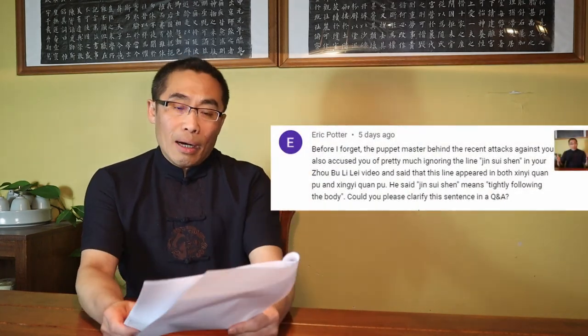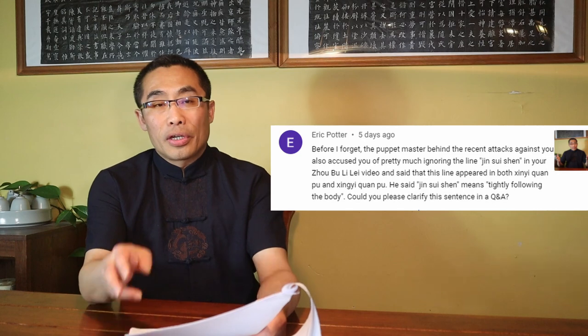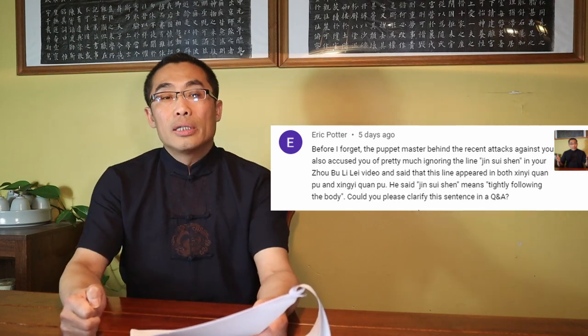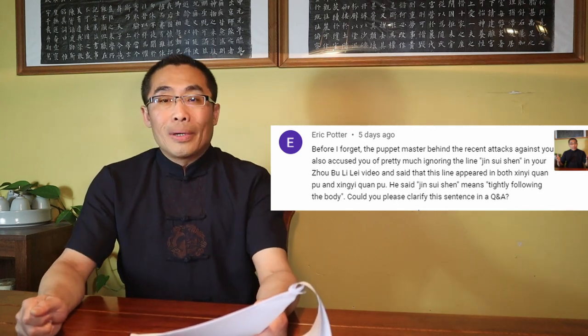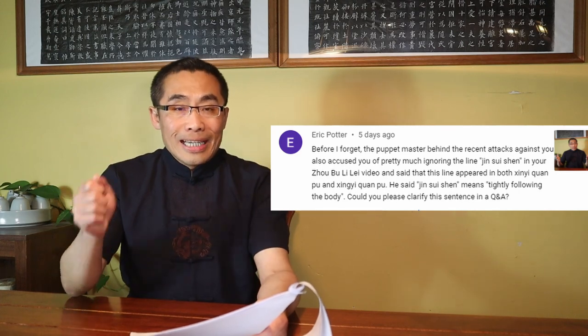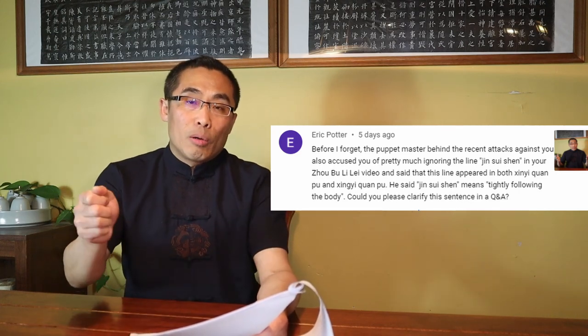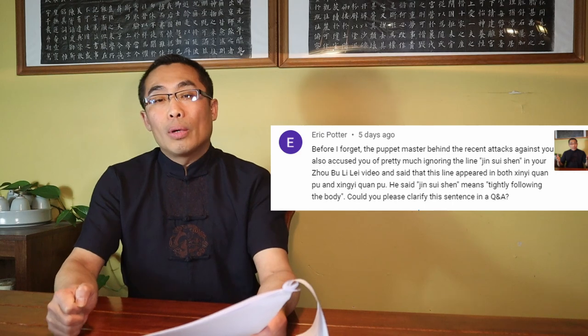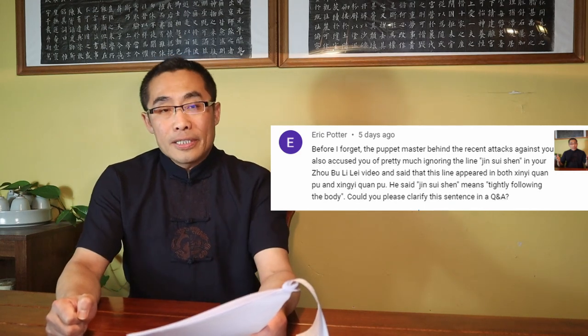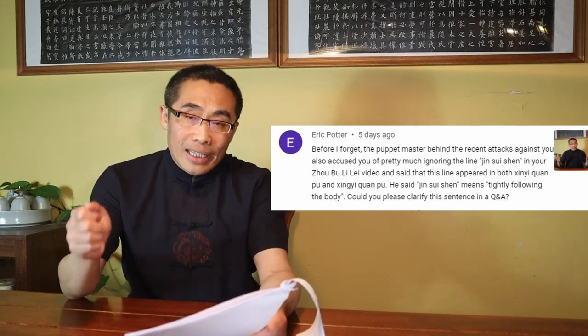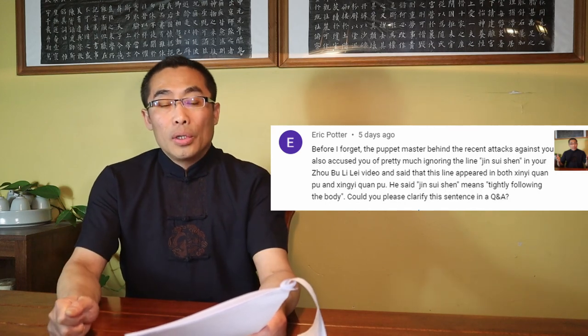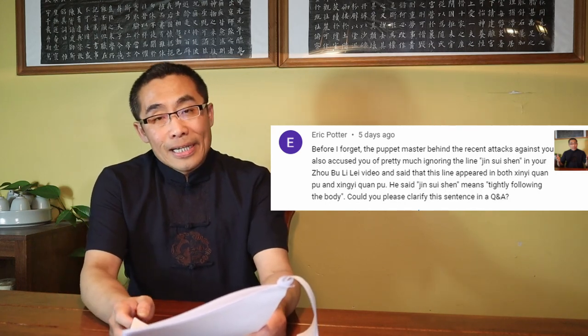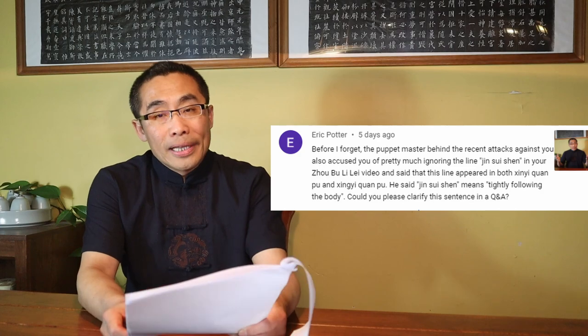Third, someone else claimed that you pretty much ignored the term Jin Sui Shen in your Zou Bu Li Lei video and said that this loan appeared in both Xin Yi Quan Pu and Xing Yi Quan Pu. He said Jin Sui Shen means tightly following the body. Could you please clarify these sentences in a Q&A?